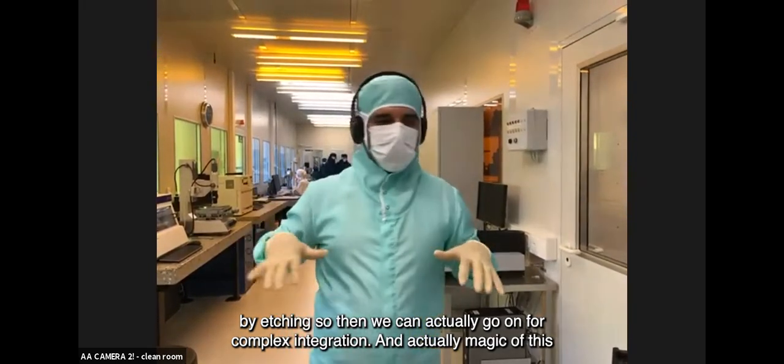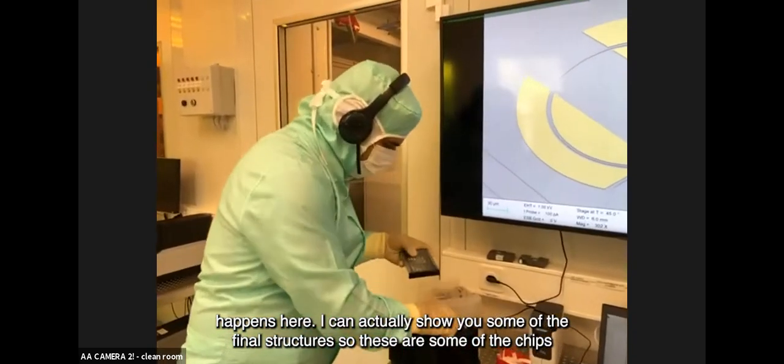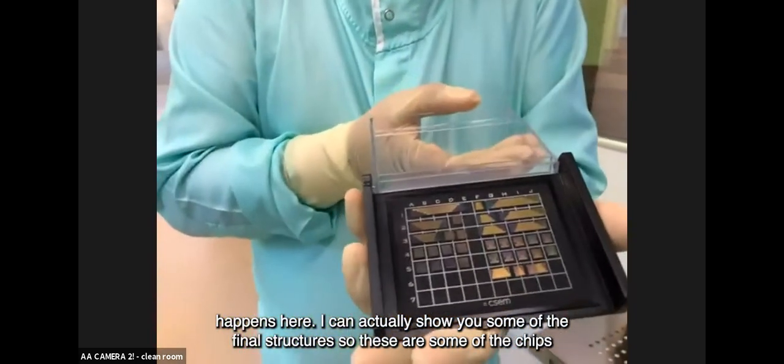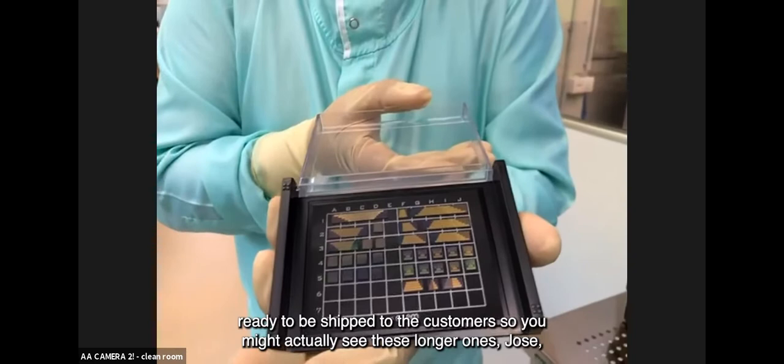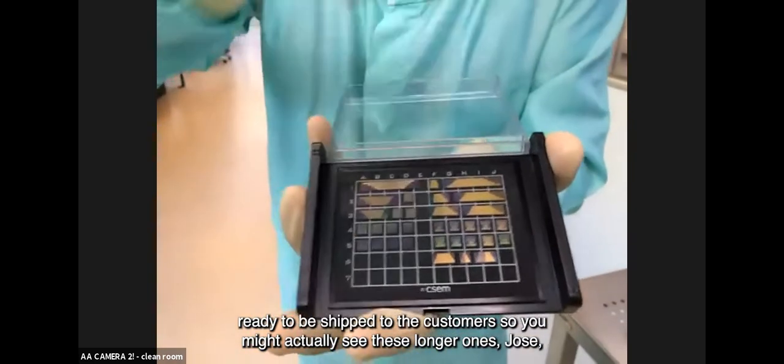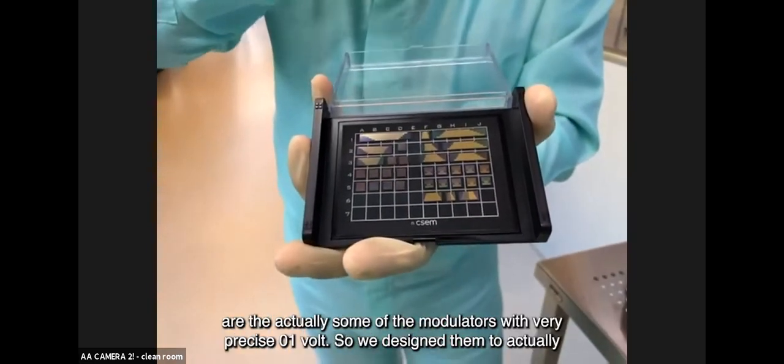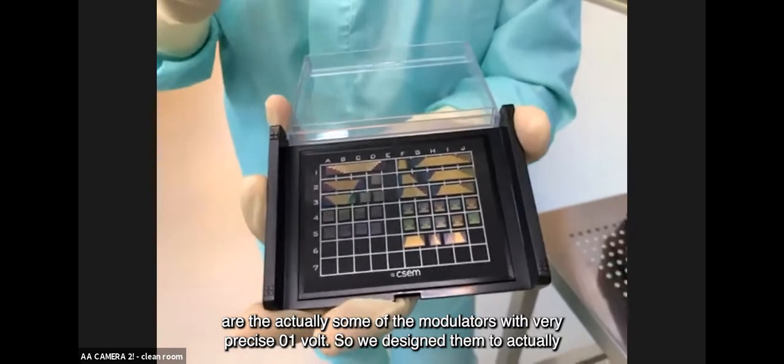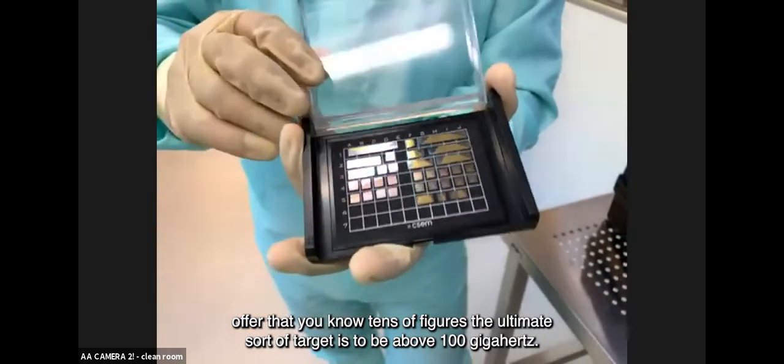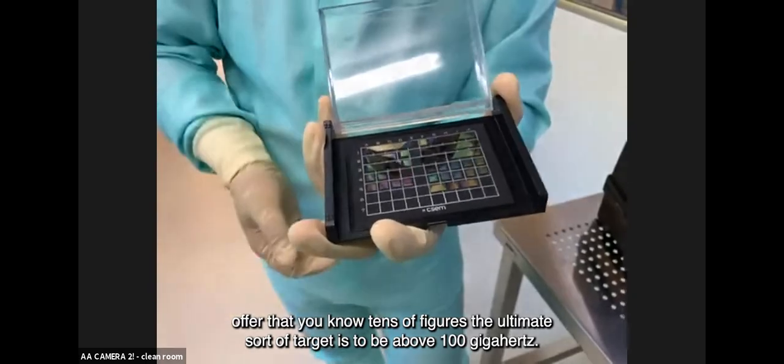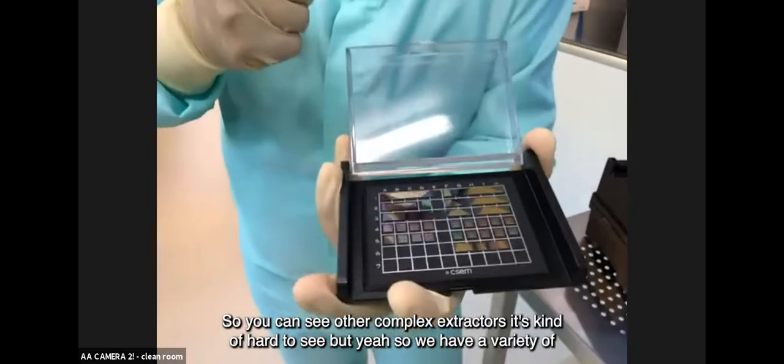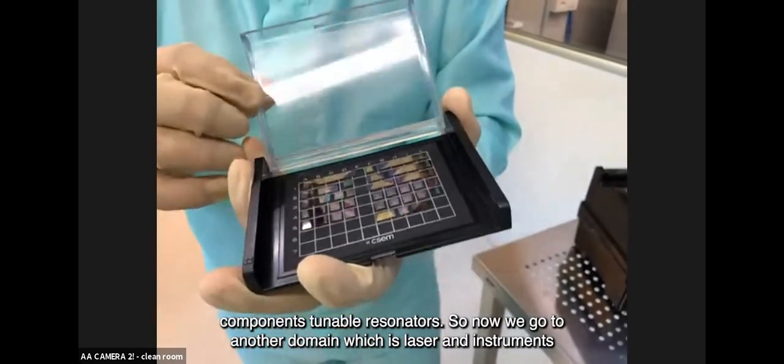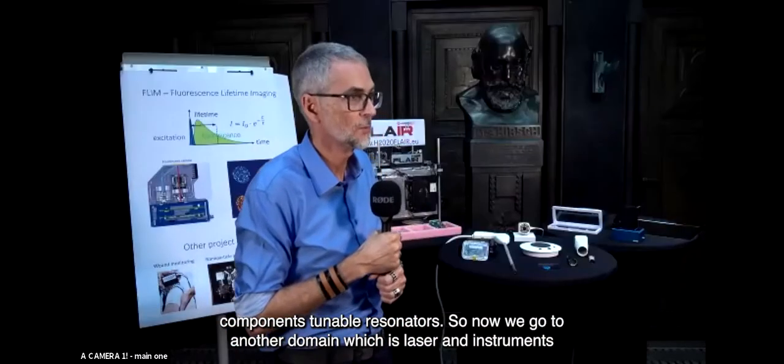The magic happens here. I can show you some of the final structures - these are chips ready to be shipped to customers. You can see these longer ones because they're actually some of the modulators with V-pi below one volt. We designed them to offer tens of gigahertz, with the ultimate target to be above 100 gigahertz. You can see other complex structures - we have a variety of components including tunable resonators.